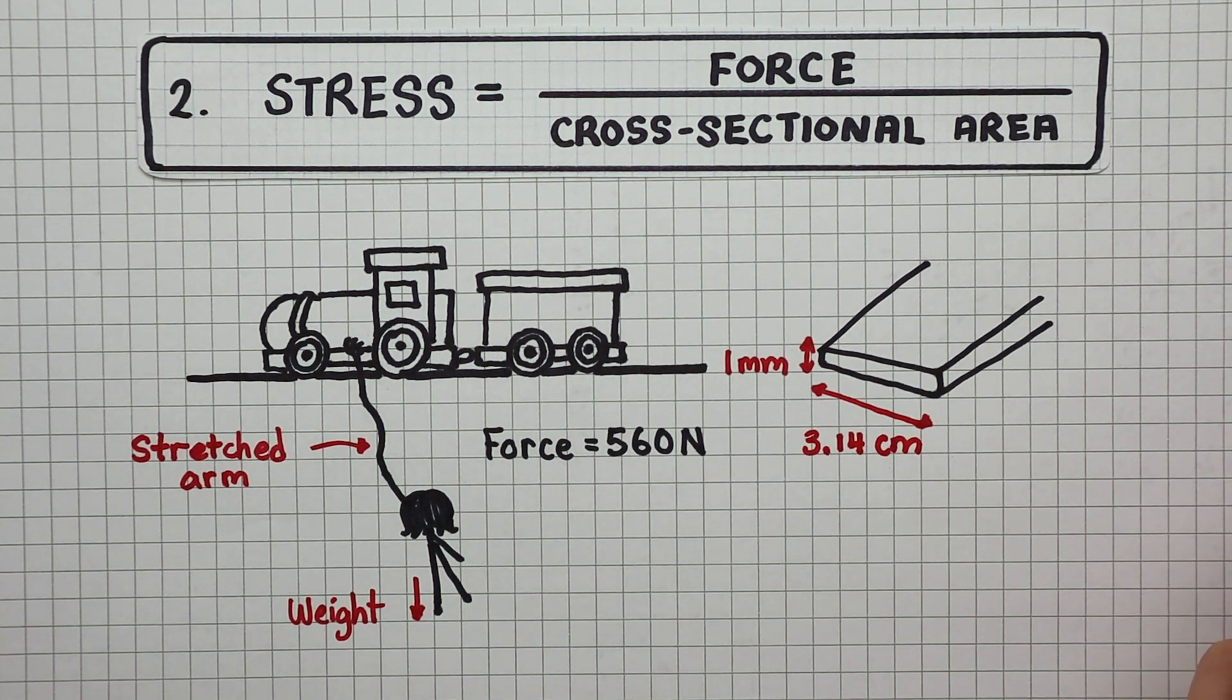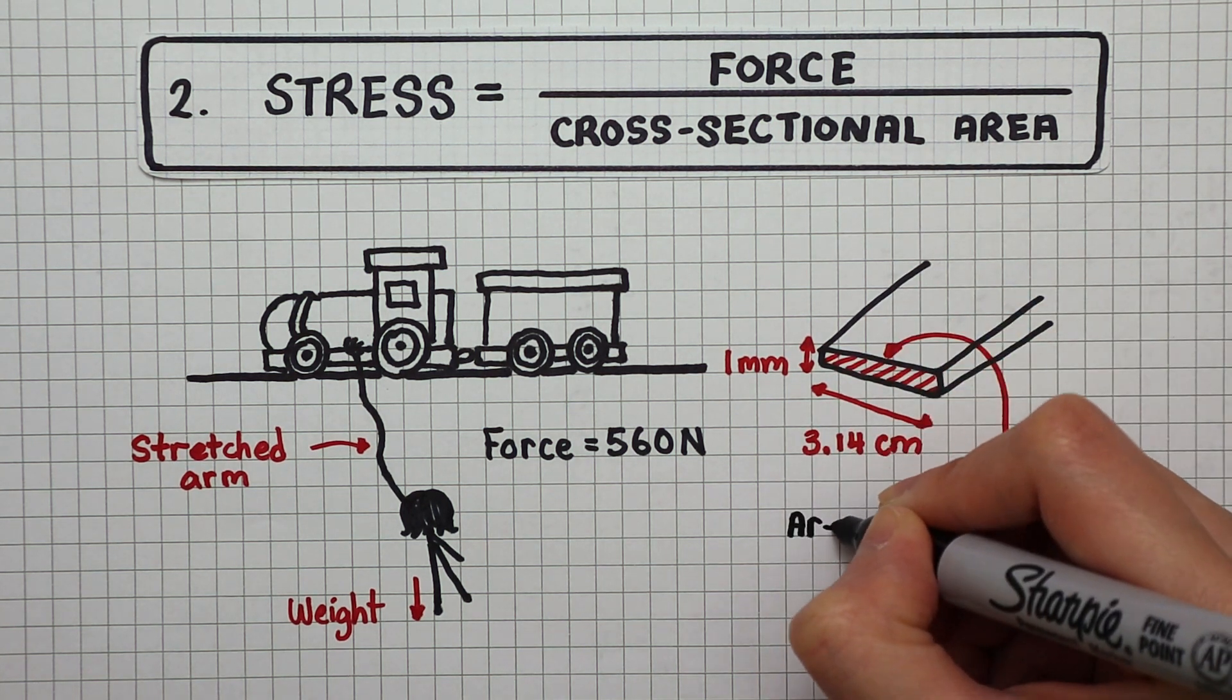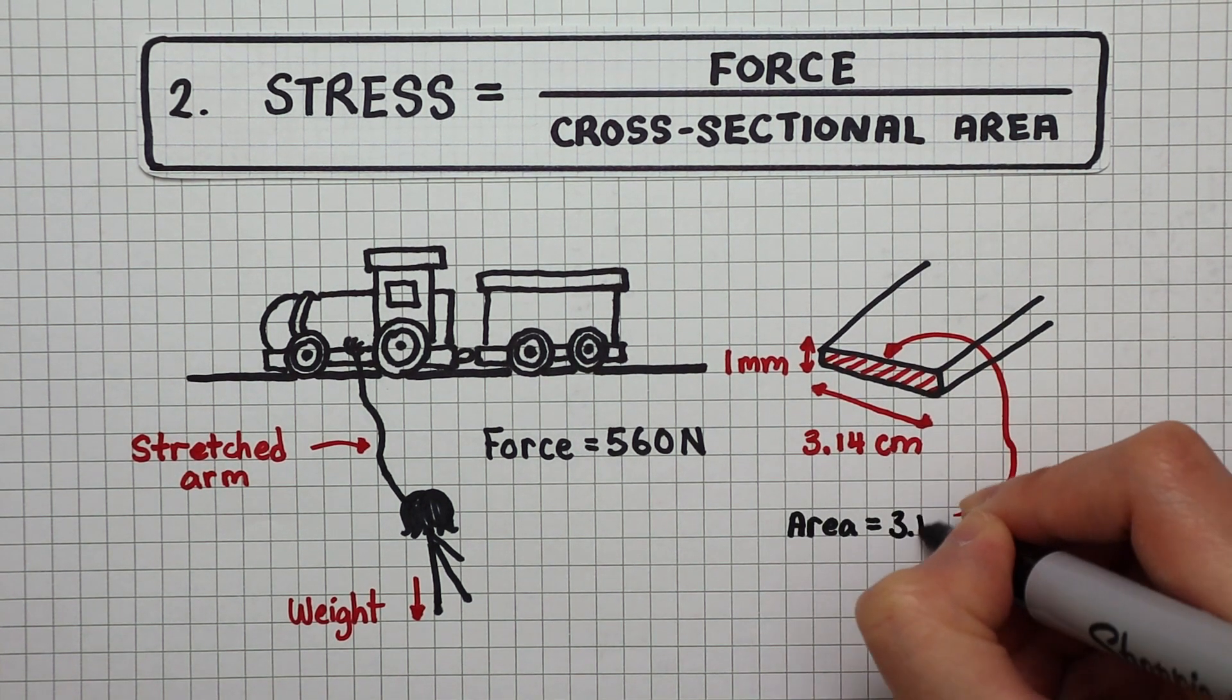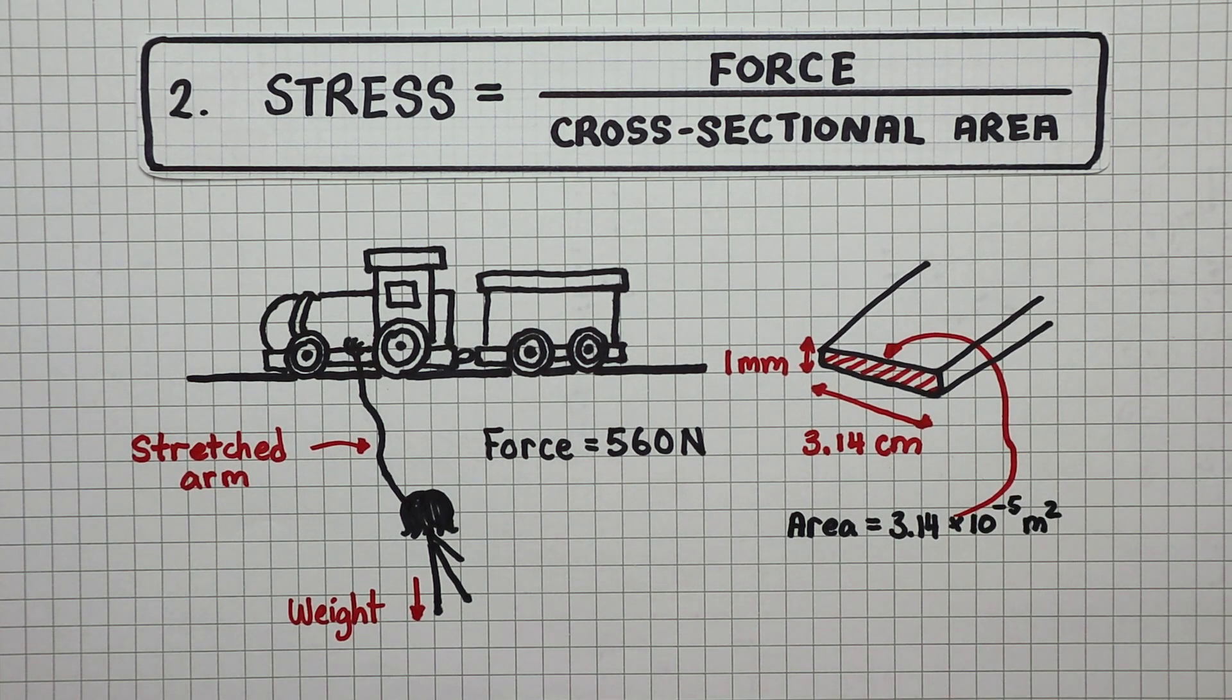If Elastigirl's rectangular arm is 1 millimeter thick and 3.14 centimeters wide, I can now work out the cross-sectional area. So we're now ready to calculate the stress.